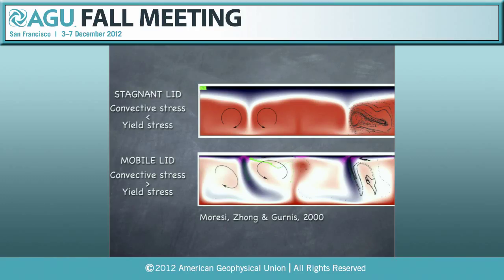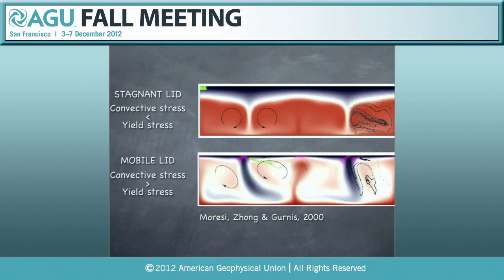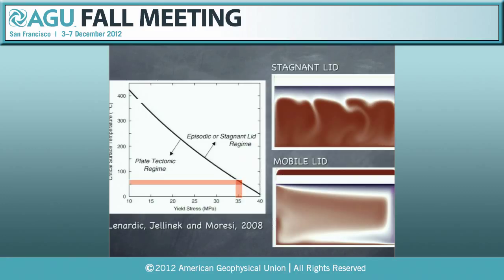Usually this is discussed in terms of a stress balance between the convective stress and the yield stress of the lid. If the convective stress is stronger than the yield stress of the lid, the lid is going to be part of the convective system. If the convective stress does not overcome the yield stress, then that lid is stable. The strength of the lid is the key.